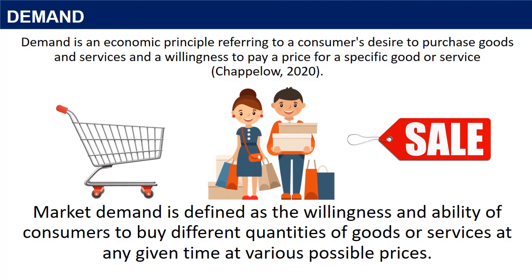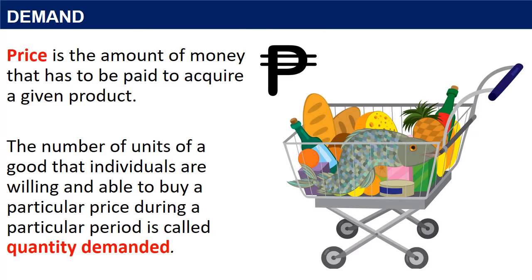Demand is an economic principle referring to a consumer's desire to purchase goods and services and a willingness to pay a price for a specific good or service. Market demand is defined as the willingness and ability of consumers to buy different quantities of goods or services at any given time at various possible prices. Because of scarcity, you cannot get all what you want. Even if you have enough money to pay for a new dress, you might decide not to buy it because it defies you with an opportunity cost. Since price influences our buying decision, consumers are hesitant to buy products at a higher price. Price is the amount of money that has to be paid to acquire a given product. The number of units of a good that individuals are willing and able to buy at a particular price during a particular period is called quantity demanded.